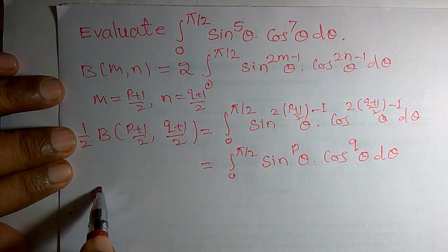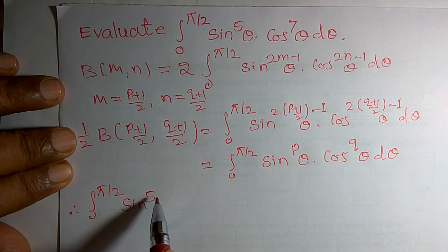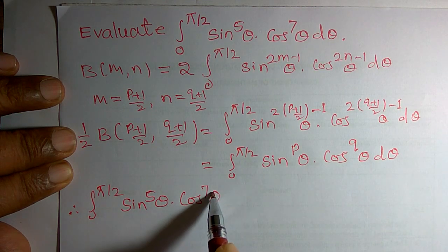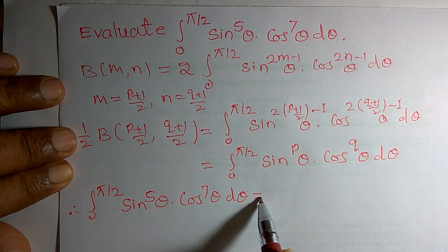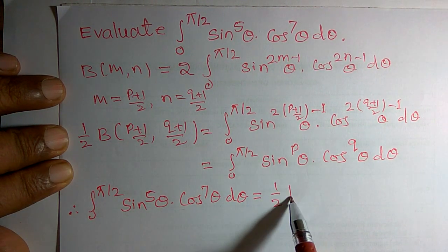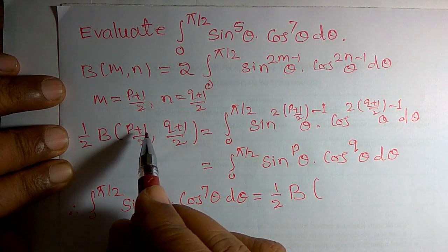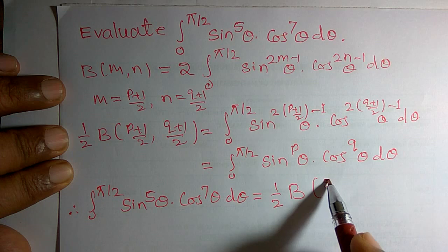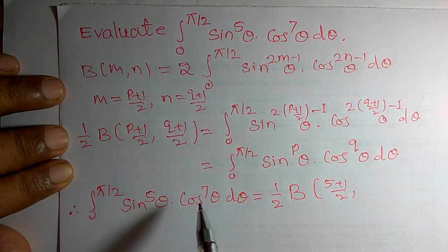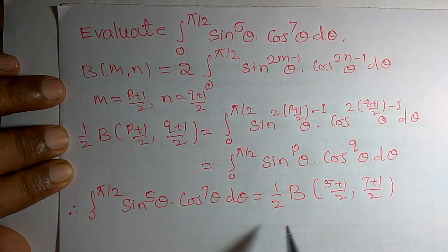Integration of 0 to π by 2 sin raised to 5 theta into cos raised to 7 theta d theta can be written as 1 divided by 2 times beta of 5 plus 1 divided by 2. Similarly, 7 plus 1 divided by 2.